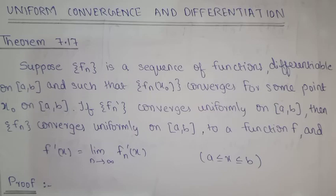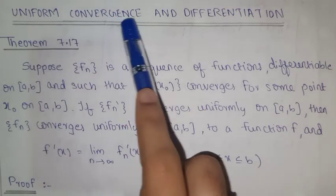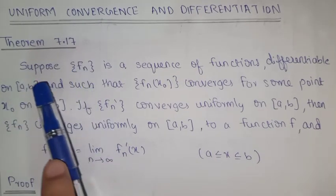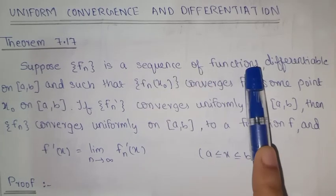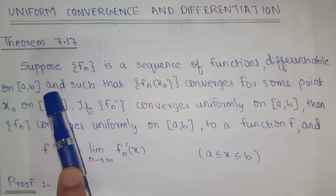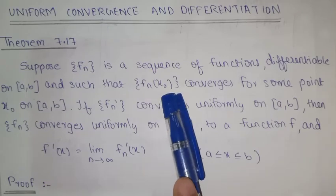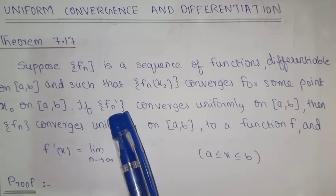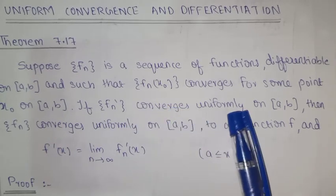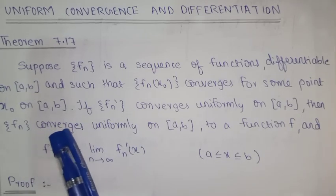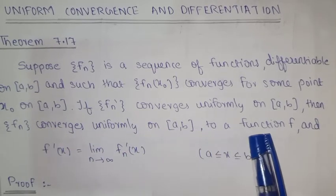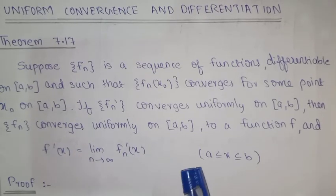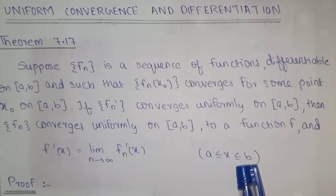The topic of this chapter is Sequences and Series of Functions, specifically Uniform Convergence and Differentiation. I will handle the first theorem, Theorem 7.17. Suppose sequence fn is a sequence of functions differentiable on closed interval [a, b], and such that the sequence fn(x0) converges for some point x0 on [a, b]. If the sequence fn' converges uniformly on [a, b], then fn converges uniformly on [a, b] to a function f, and f'(x) = lim(n→∞) fn'(x) for a ≤ x ≤ b.